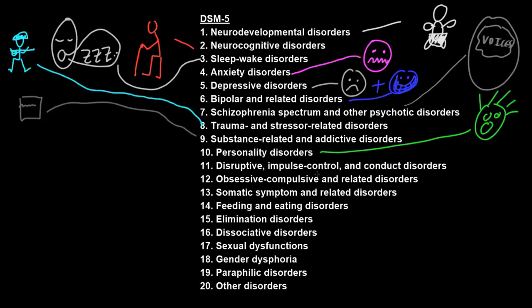Disruptive, impulse control, and conduct disorders involve distress or disability from behaviors that are unacceptably disruptive or impulsive for a person's culture. Obsessive-compulsive and related disorders involve distress or disability from obsessions or compulsions. Obsessions are thoughts that recur involuntarily and which are often unwelcome. Compulsions are activities that a person feels they must do and which are often related to an obsession. A common example is someone having an obsession that their hands are dirty and then a compulsion to wash their hands many more times a day than would be normal.